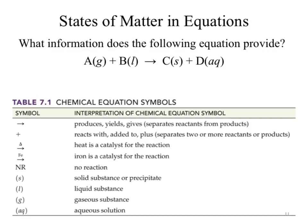What about NR? There's no NR in that equation because that equation did react — it produced C and D. But what if it didn't react? We can just write NR. There's no point in trying to predict products if there are none, so we can just write 'no reaction.'